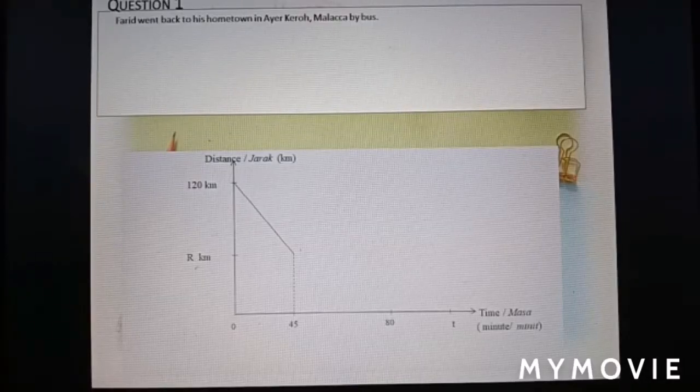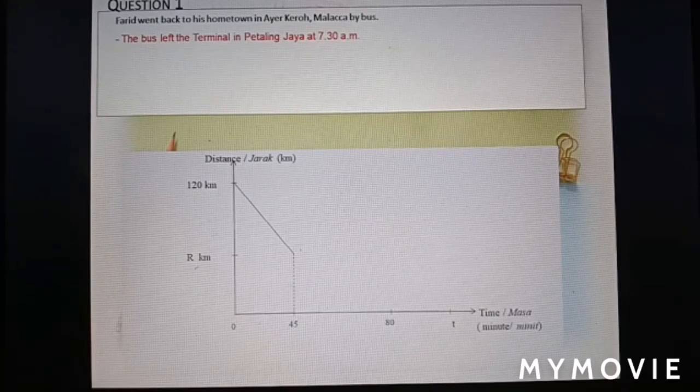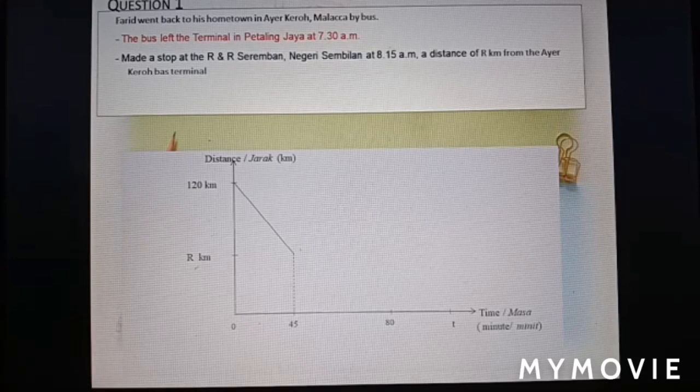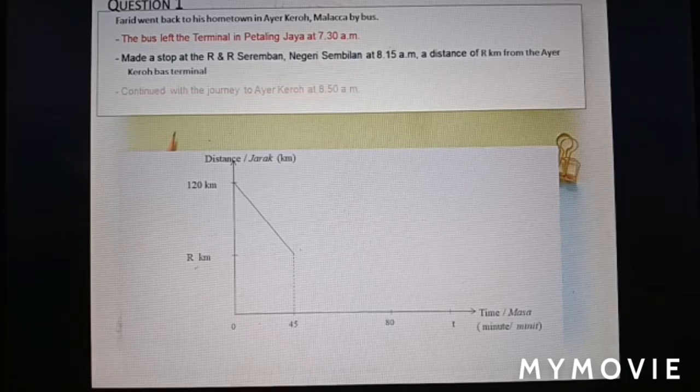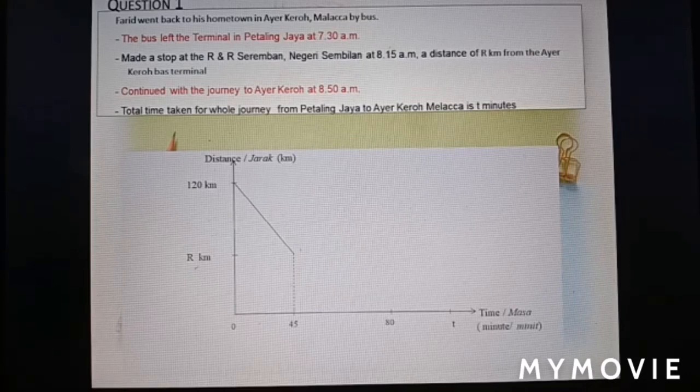Question number 1. Farid went back to his hometown in Ayer Keroh, Melaka by bus. The bus left the terminal in Petaling Jaya at 7:30 a.m., made a stop at the R&R Seremban, Negeri Sembilan at 8:15 a.m., a distance of R km from Ayer Keroh bus terminal. Continued with the journey to Ayer Keroh at 8:50 a.m. Total time taken for whole journey from Petaling Jaya to Ayer Keroh, Melaka is 3 minutes.